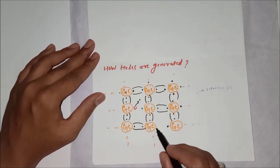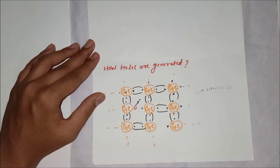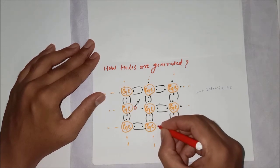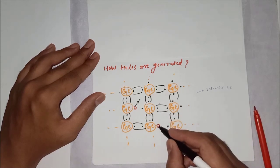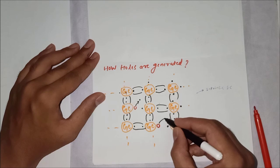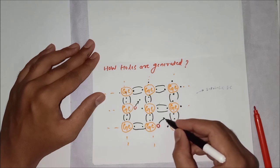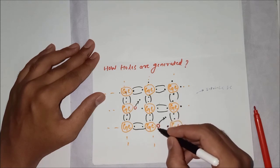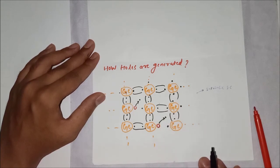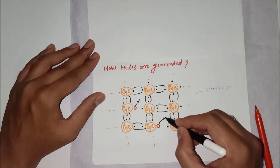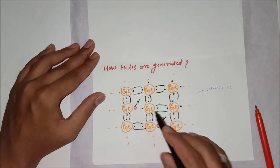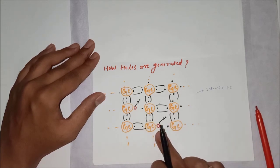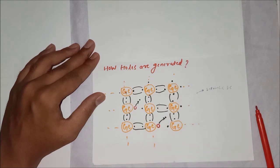Whenever an electron moves away, a vacancy is created and that vacancy is a hole — it represents the absence of an electron. The hole is also created when an electron receives heat energy, escapes from its position, and creates a vacancy. So whenever electrons move, vacancies are created, and those vacancies are holes representing the absence of electrons.